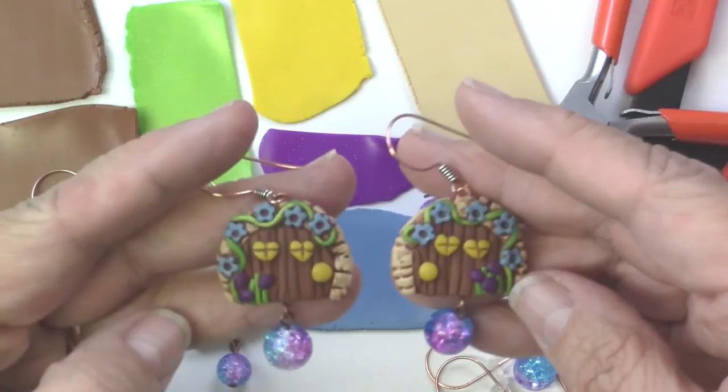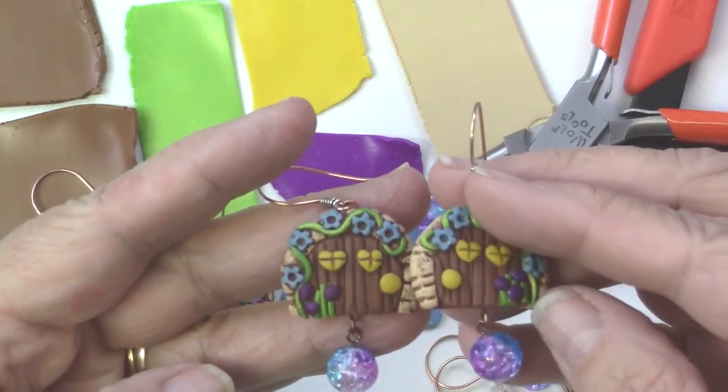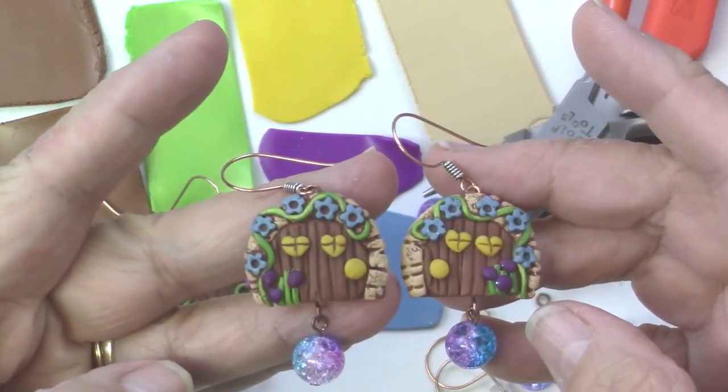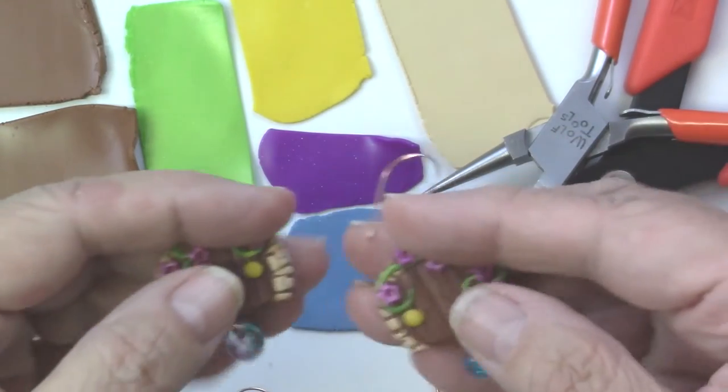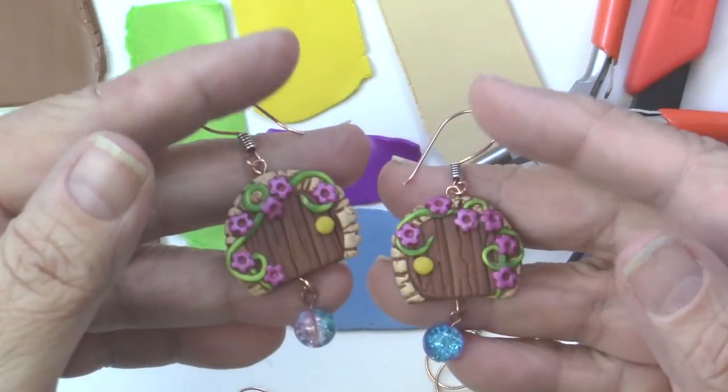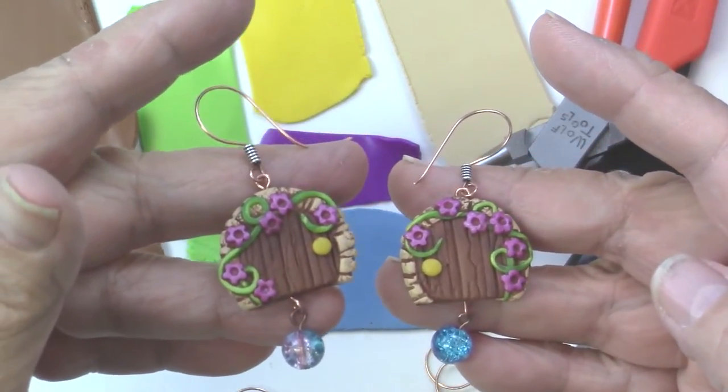Once you get the shape down for these earrings you can embellish them in any way you'd like. Here's some with little heart windows and blue flowers and here's some that are a bit plainer with lavender flowers. You can make all sorts of designs and little dangles.